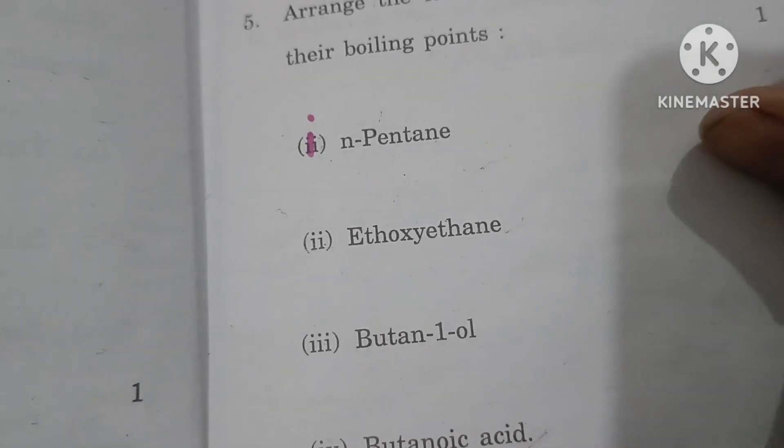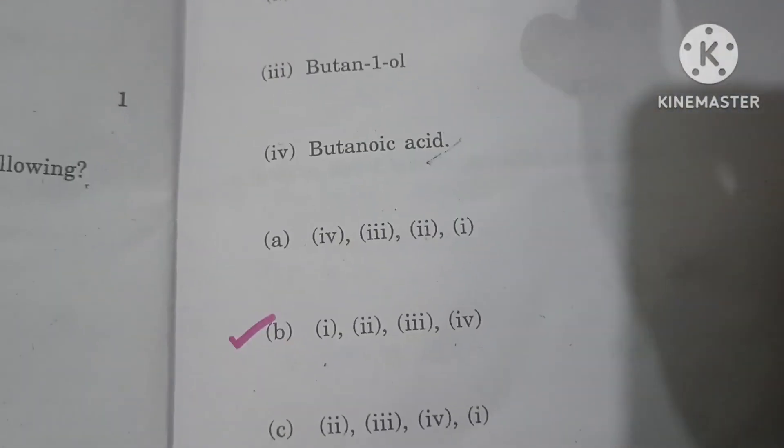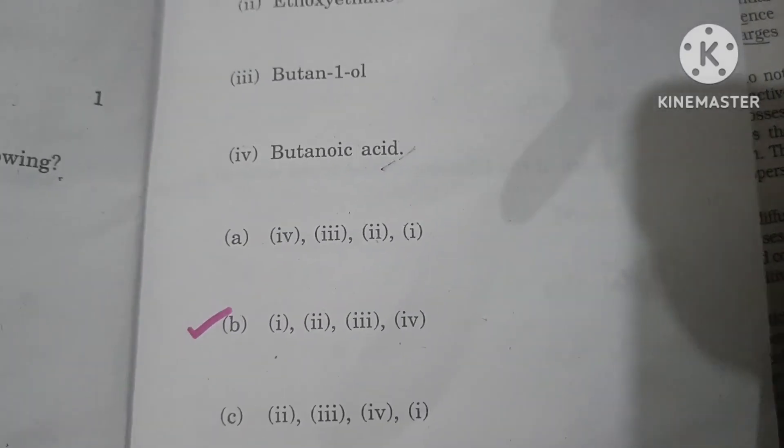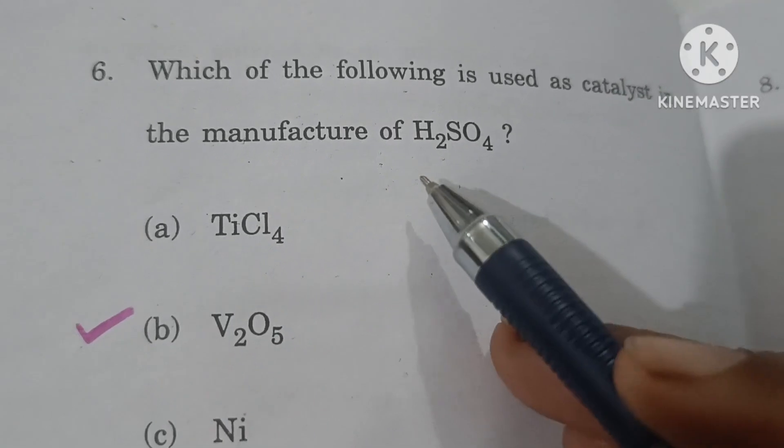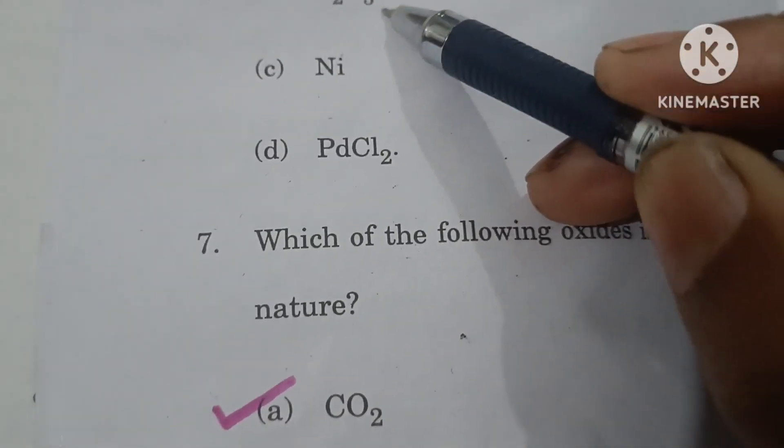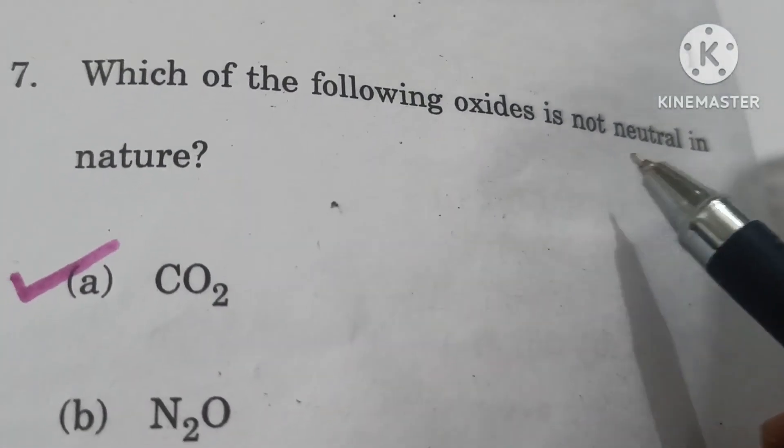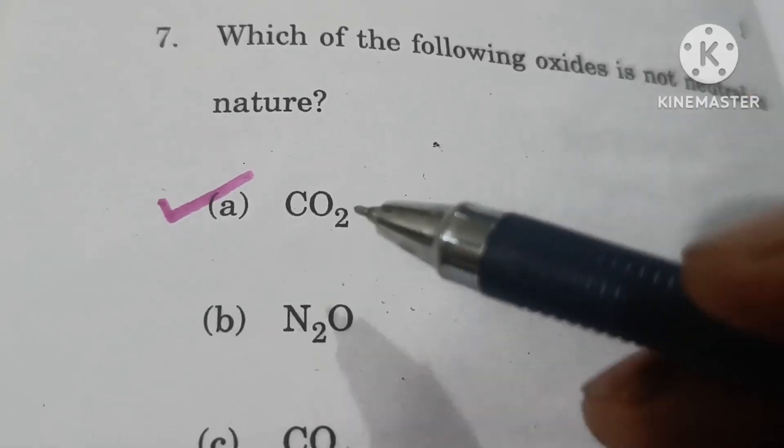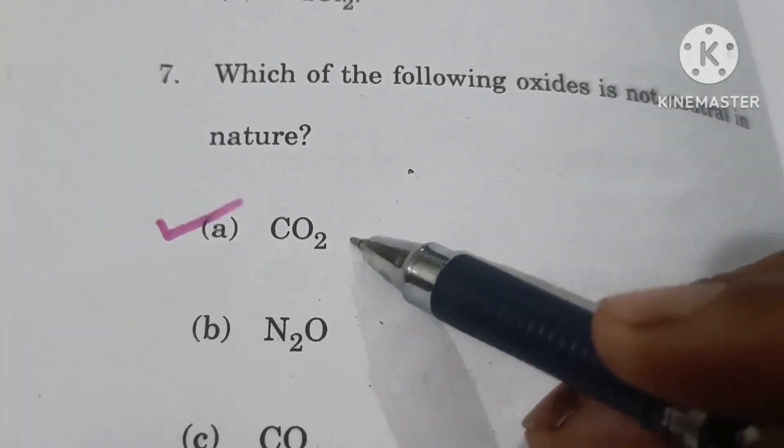Which of the following is used as a catalyst in the manufacture of sulfuric acid? Vanadium pentoxide is your answer. Which of the following oxide is not neutral in nature? Carbon dioxide is acidic in nature. It dissolves in water to form carbonic acid, so option A is the correct answer.